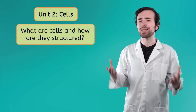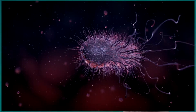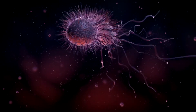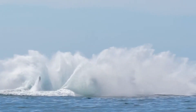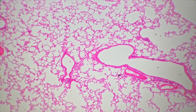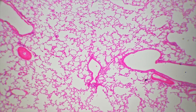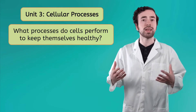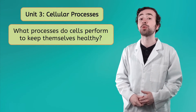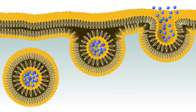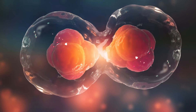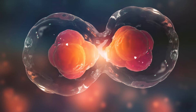For Unit 2, we will be addressing the question: what are cells, and how are they structured? From the tiniest bacterium to the largest whales, every living thing is made up of these tiny building blocks. In this unit, we'll explore the various kinds of cells and what makes them unique. In Unit 3, we'll ask: what are the processes, or tasks, that cells perform in order to keep themselves healthy? Whether it's taking in nutrients, expelling wastes, or just growing and reproducing, cells always have a process that they follow.